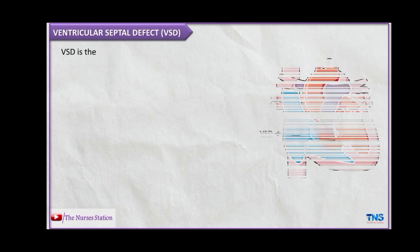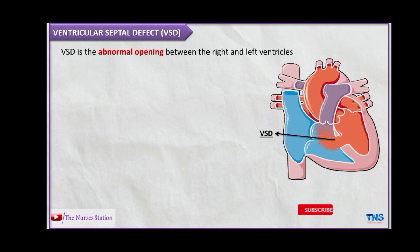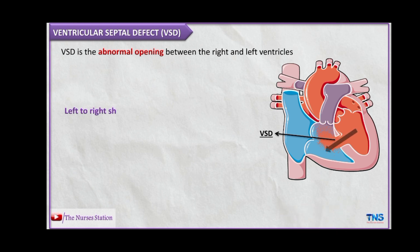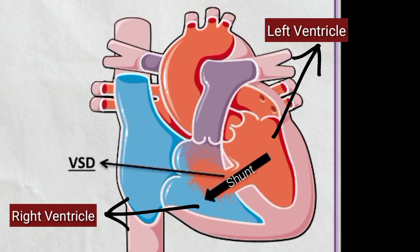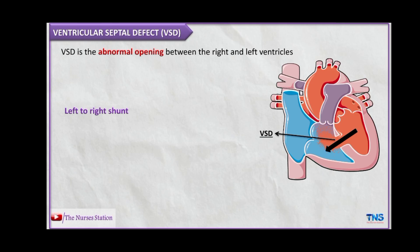The VSD, or ventricular septal defect, is an abnormal opening between the right and the left ventricles. This results in a left-to-right shunt, meaning blood from the higher pressure left ventricle passes through the VSD into the lower pressure right ventricle.